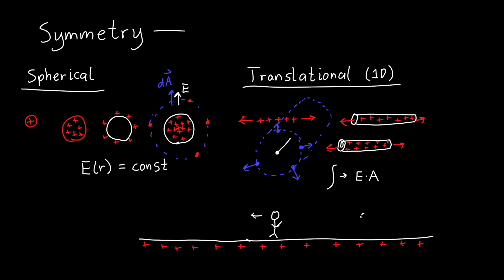Now suppose I move some distance d to the right. Has anything changed? I still see an infinite amount of charge in both directions — nothing has really changed. This is why it's called translational symmetry: if I translate myself, everything looks the same. The Gaussian surface we use for this case is a cylinder.